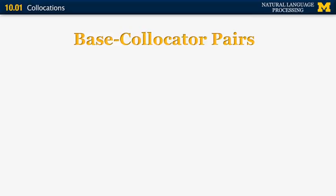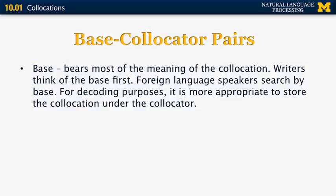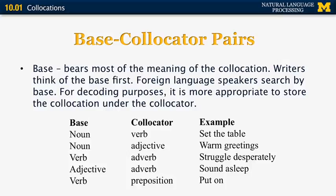One important distinction in collocation analysis is between the base and the collocator. The base is defined as what bears most of the meaning of the collocation — writers think of the base first, and foreign language speakers search for an expression in the dictionary based on the base. For decoding or understanding, it's more appropriate to store the collocation under the collocator. For example, in set the table, the base is the noun table and the collocator is the verb. For noun-adjective pairs, the base is the noun and the collocator is the adjective; adverbs and prepositions are always the collocators.